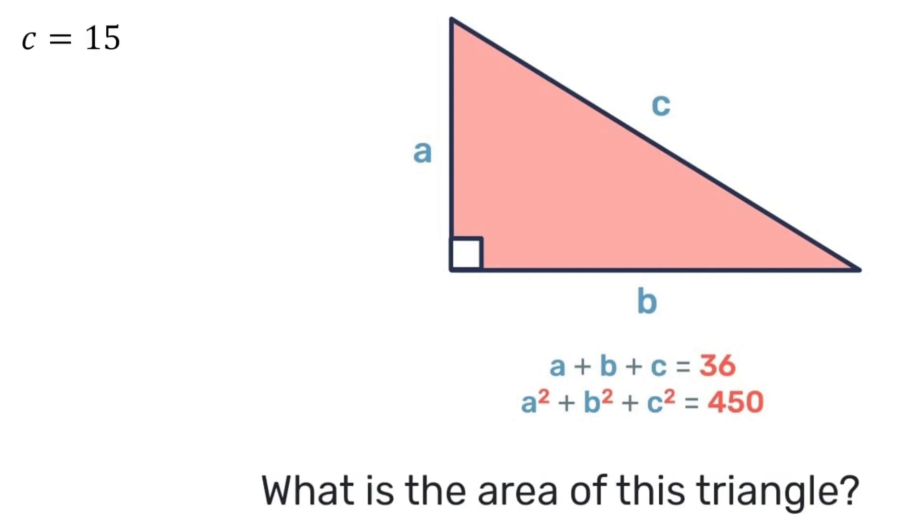Let's see, next we know that c is 15, a plus b is 21. So let's square a plus b. We'll have a plus b squared is equal to 21 squared. Expanding brackets, we'll have a squared plus 2ab plus b squared is equal to 441.